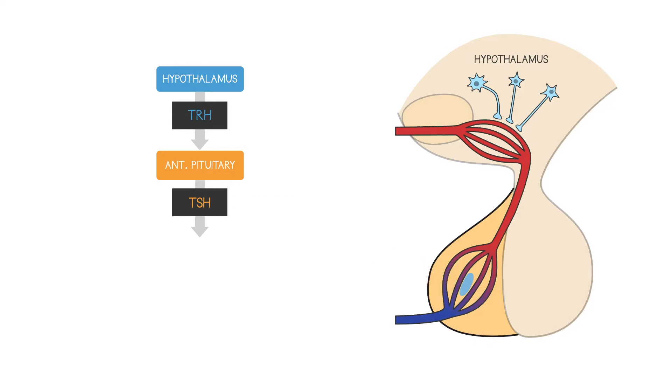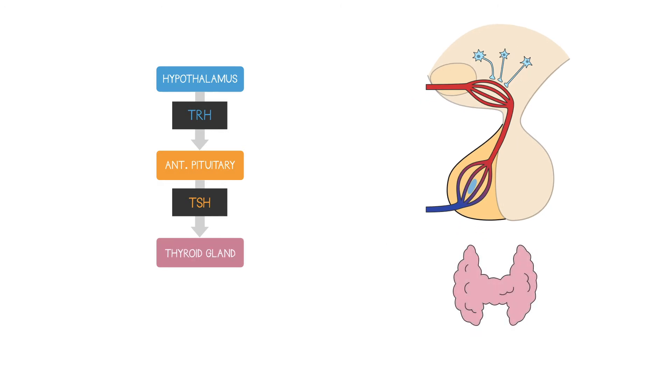The TSH travels in the blood to the thyroid gland where it stimulates the release of thyroid hormones which will increase your metabolic rate.